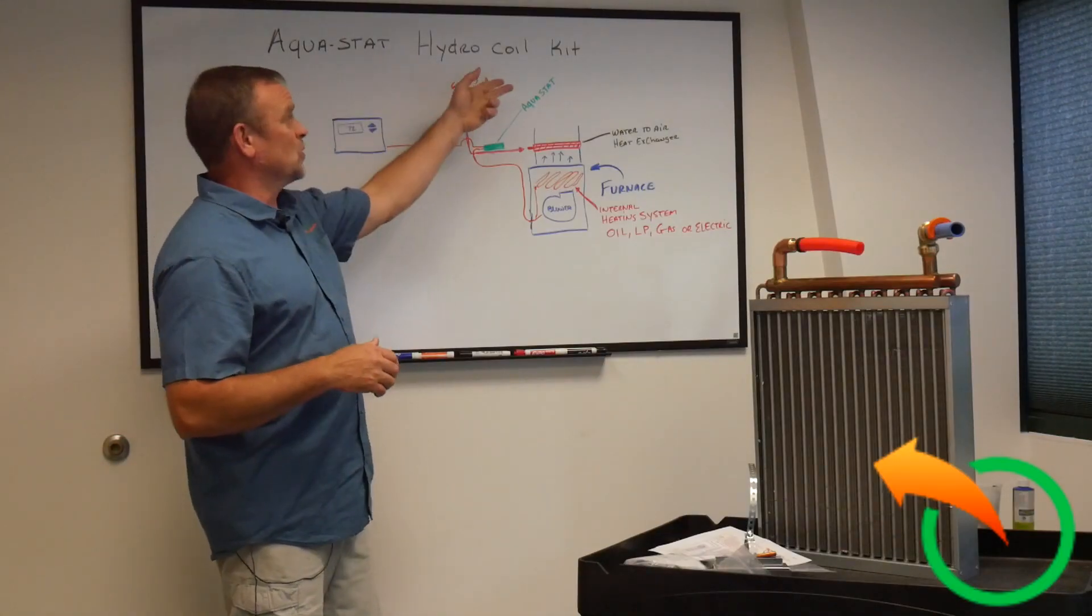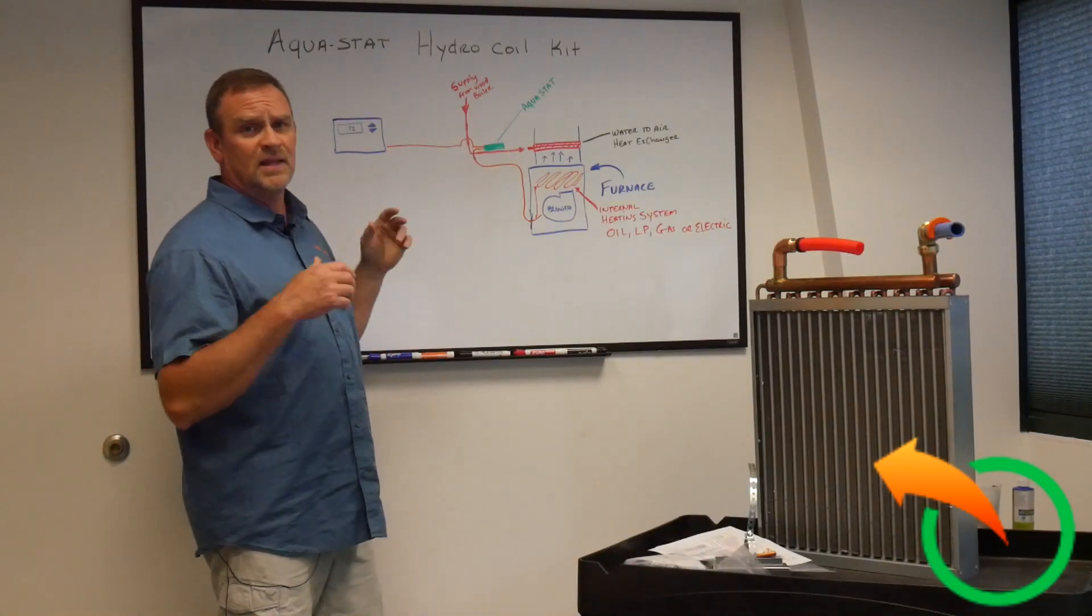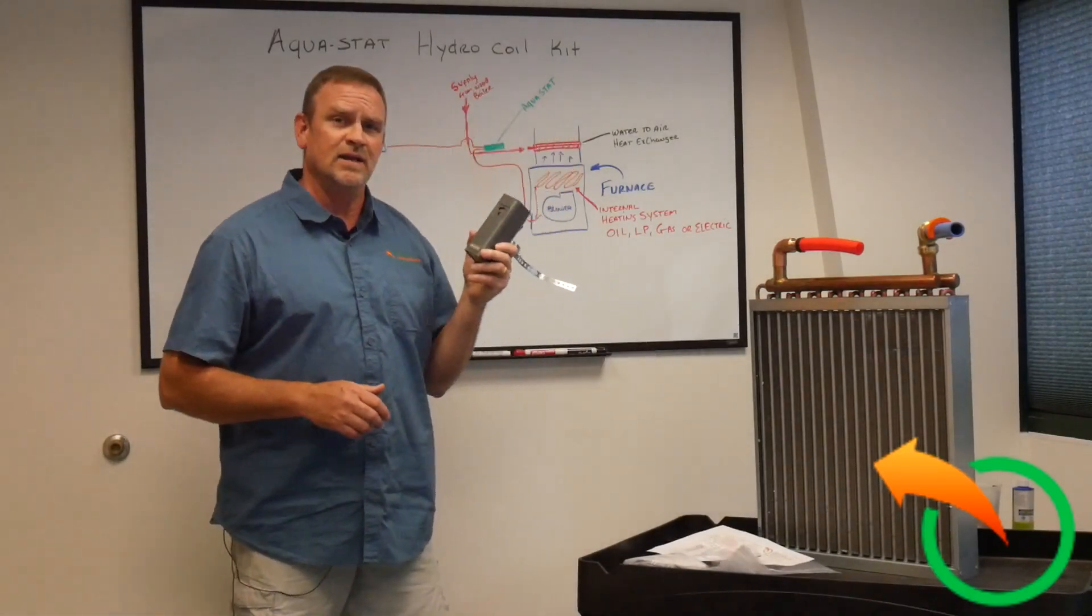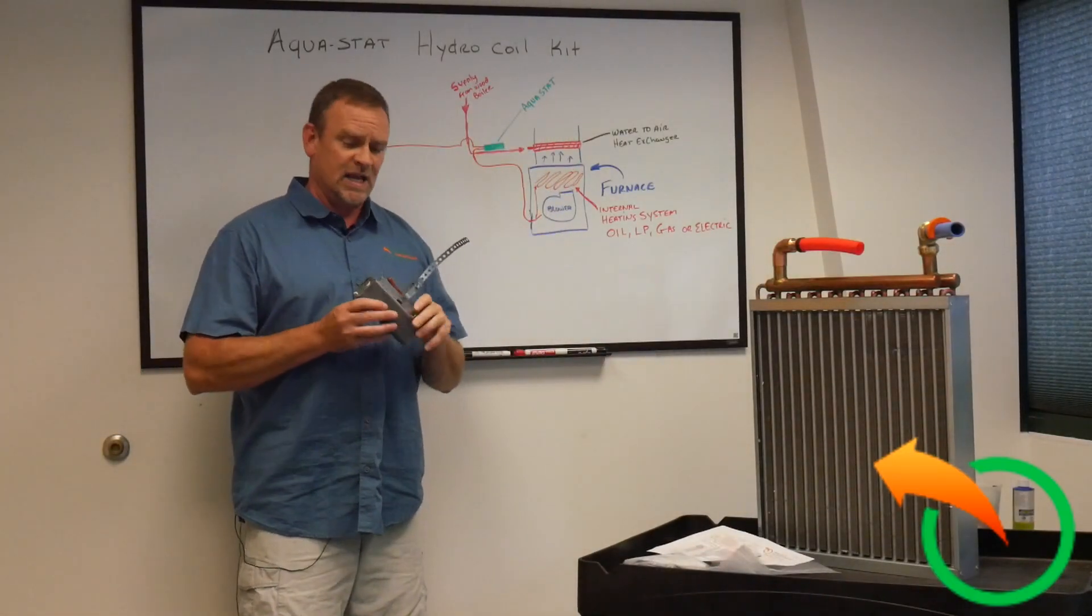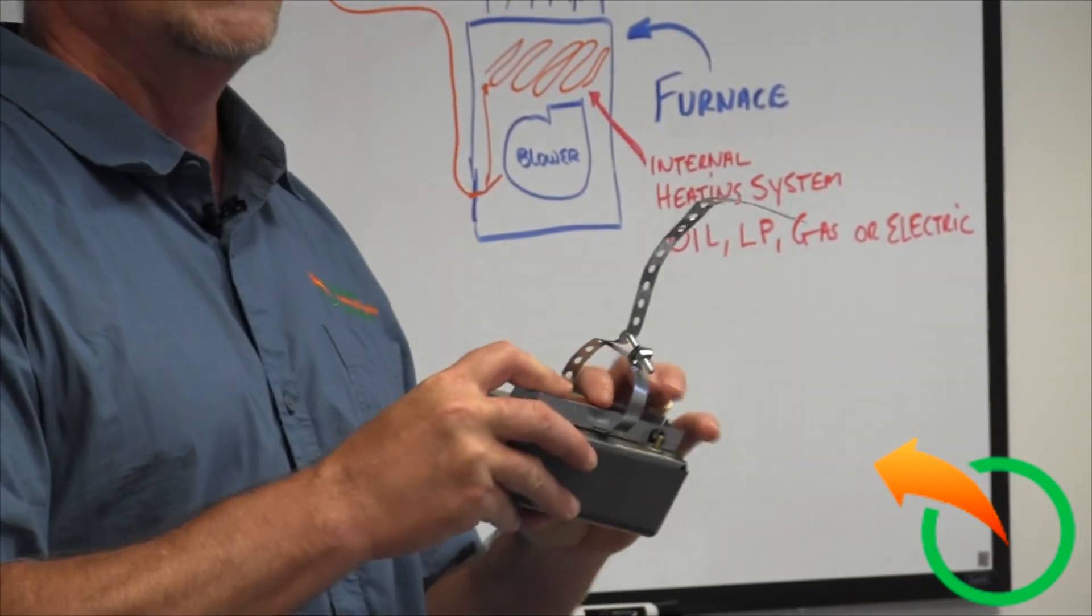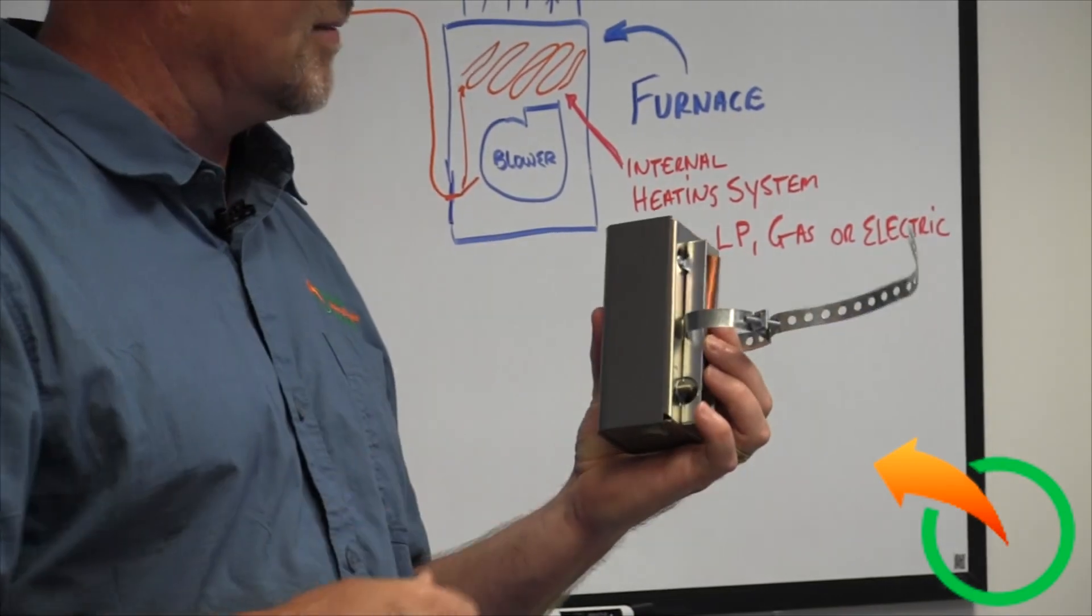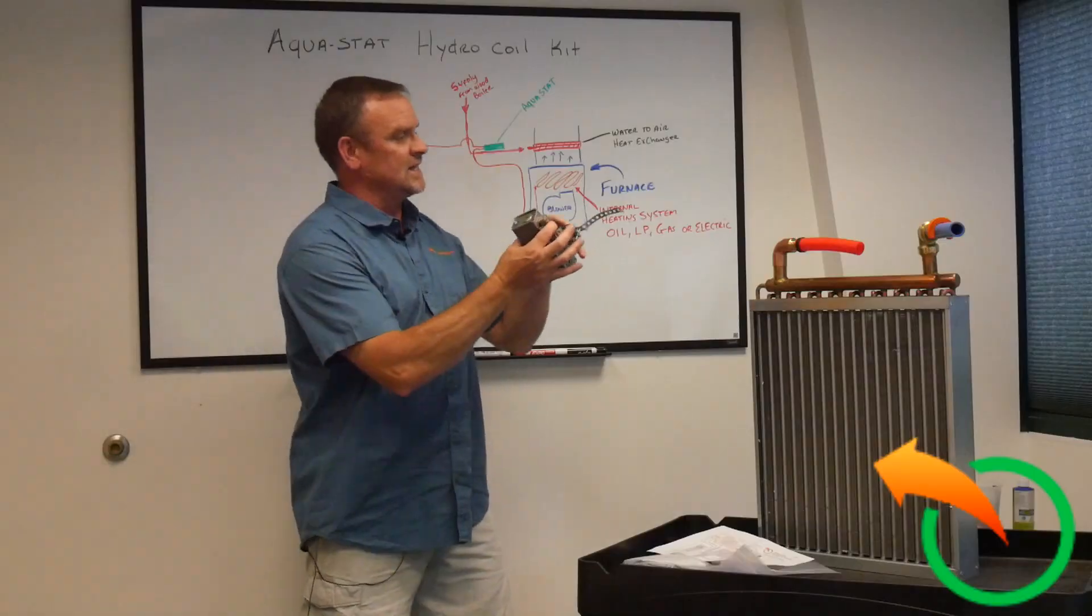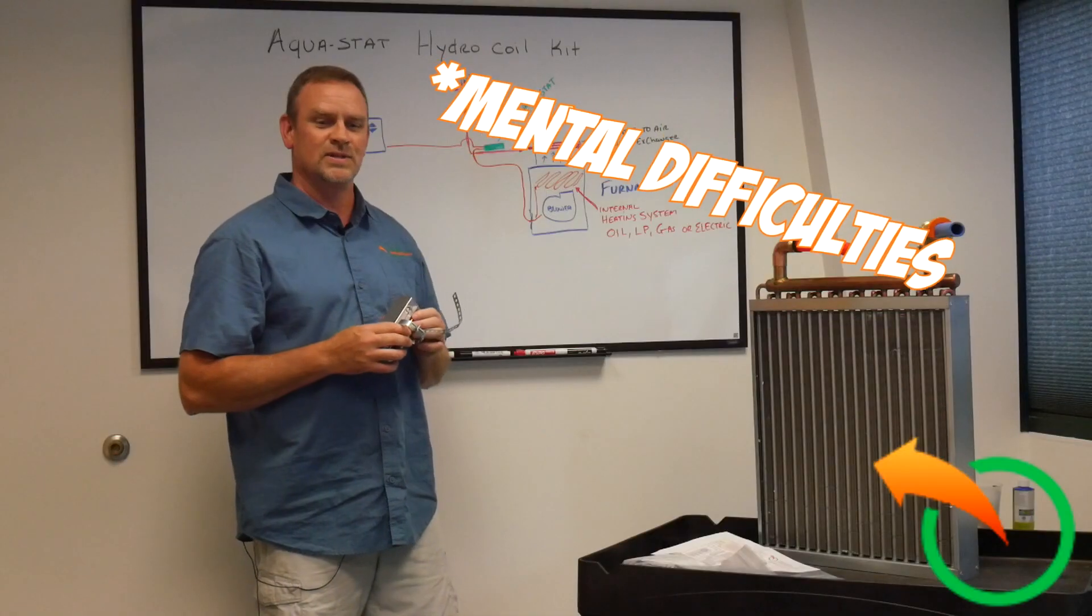It's what I call an Aquastat Hydrocoil Kit and even if you don't get my kit, it's the same concept, is you simply mount a surface mount Aquastat and what I mean by a surface mount or a strap on Aquastat, it's just the name they give it in the industry, it's an Aquastat that you actually mount to the PEX line.